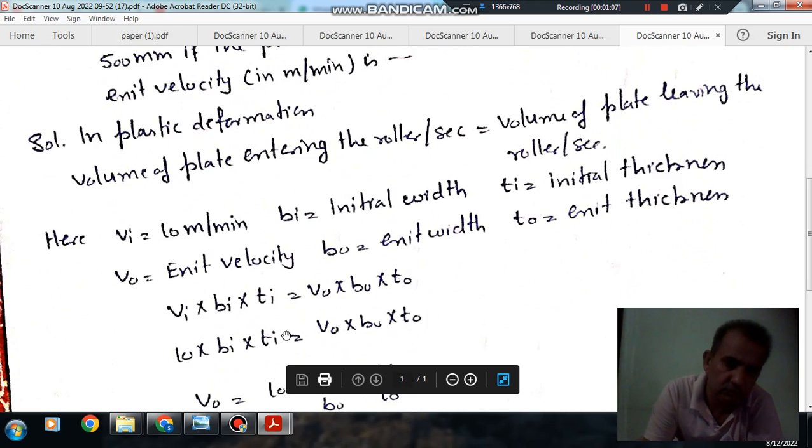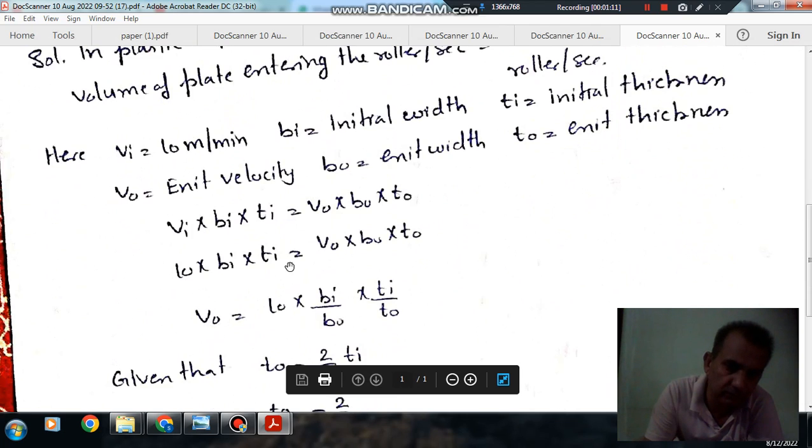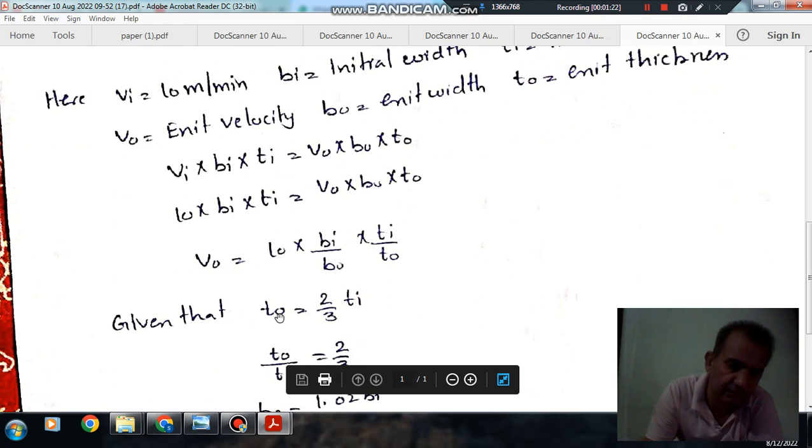From this, vi is 10, so we have v0 equals 10 × bi × ti divided by b0 × t0. And it is given that